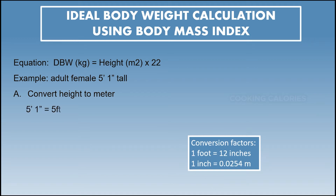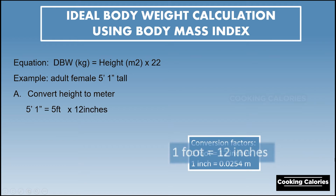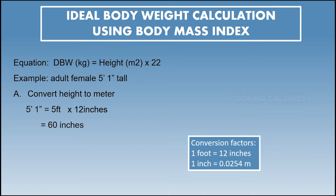We multiply 5 feet by 12 inches, because 1 foot is equivalent to 12 inches. So 5 times 12 equals 60. Now we will add 1 inch from the height, which is 5'1", so 60 plus 1 equals 61 inches.